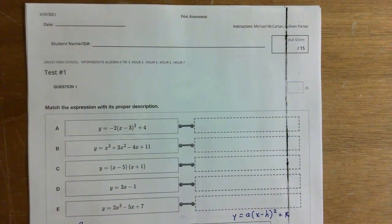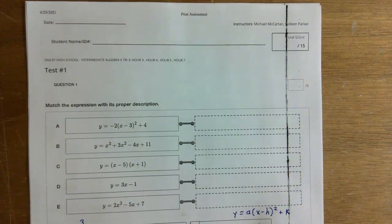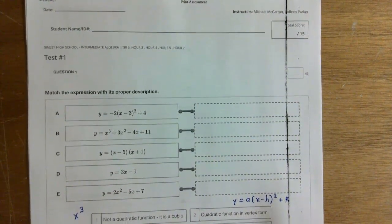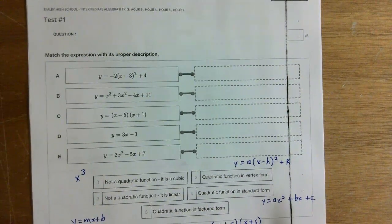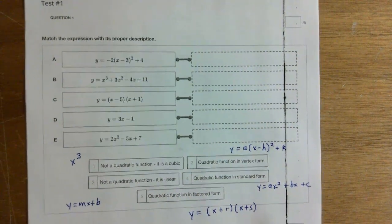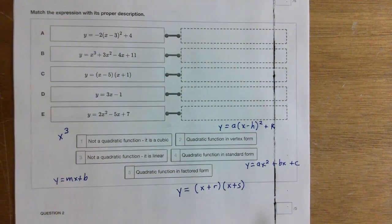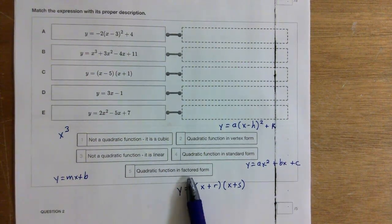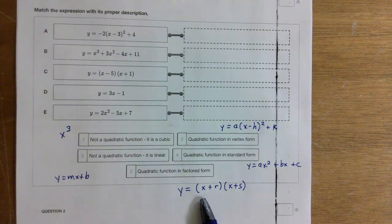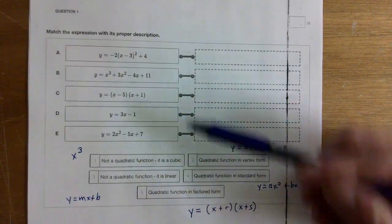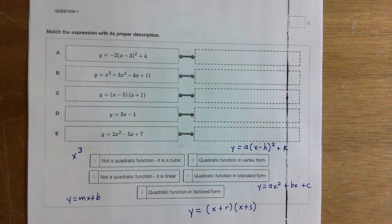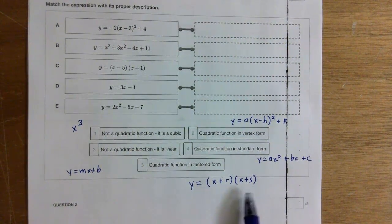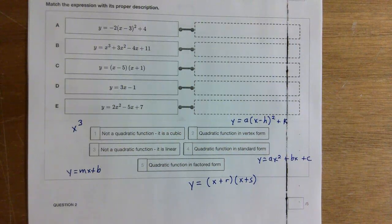Okay, hello everyone. We'll take a look at test number one. The first question is matching. I'm going to suggest you start with the one that's in factored form — that form looks like two linear binomials multiplied together. Look at all of these and find which one looks like that, then eliminate it.